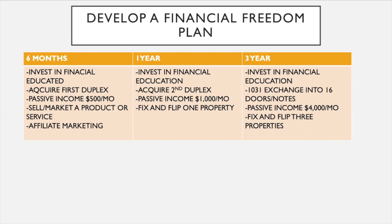In year three, things just start to escalate. As you carry on the same plan of buying a property every six months to a year with creative financing, and do a 1031 exchange, you carry all the appreciation value into future doors and notes — accumulating and acquiring 16 doors and units within that three-year period.